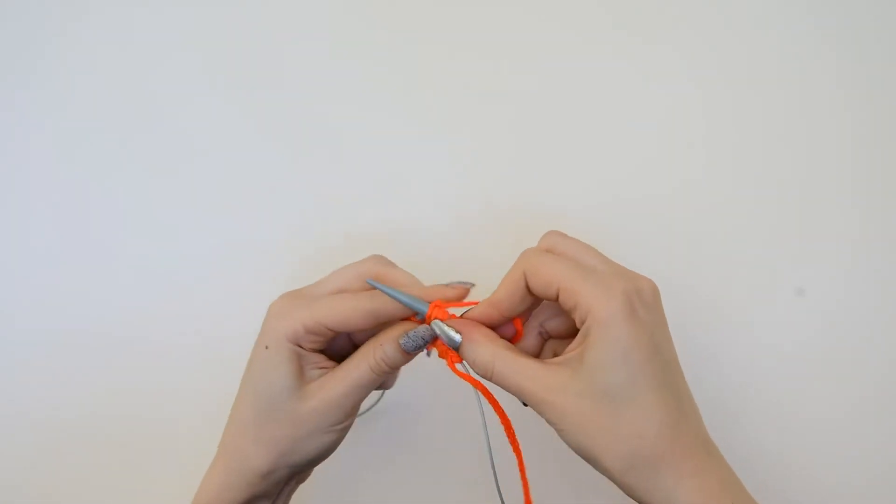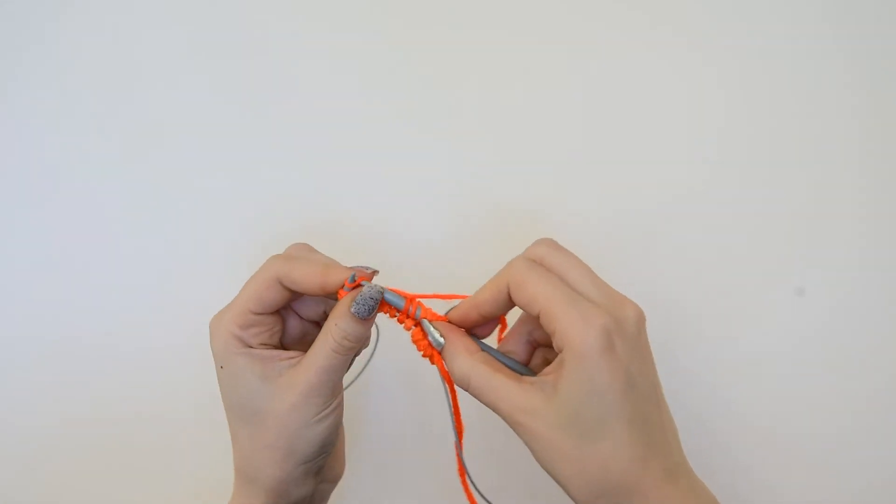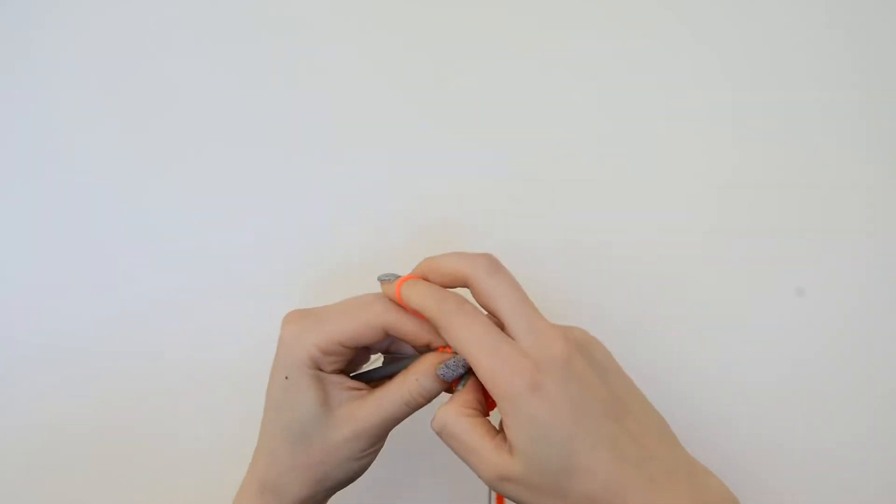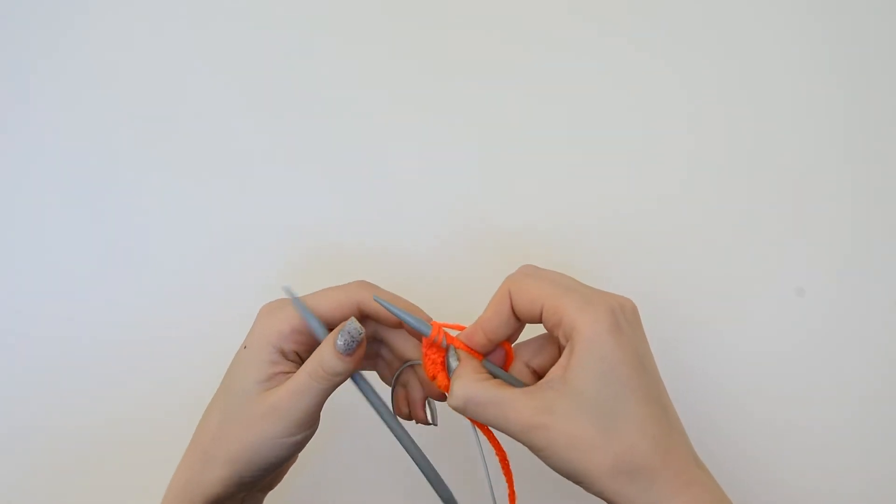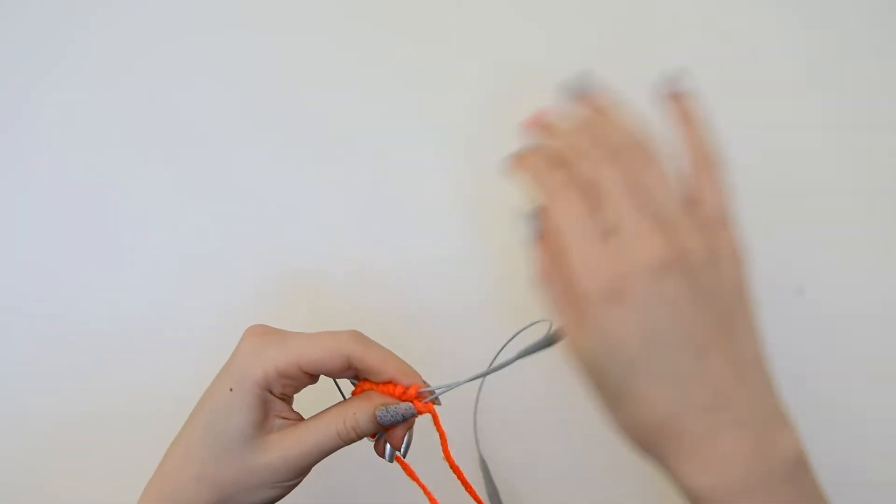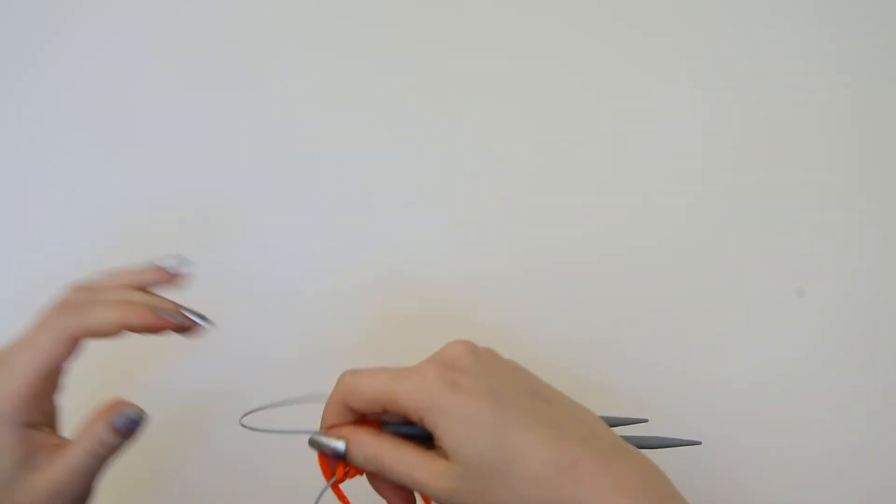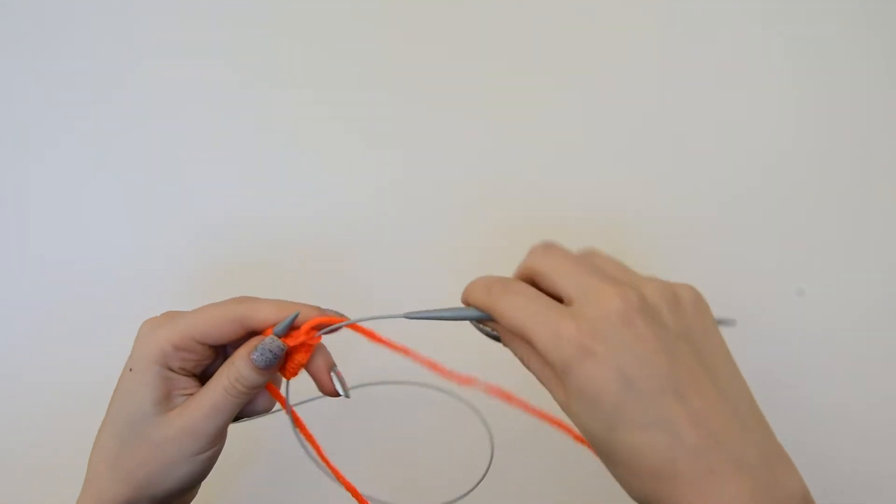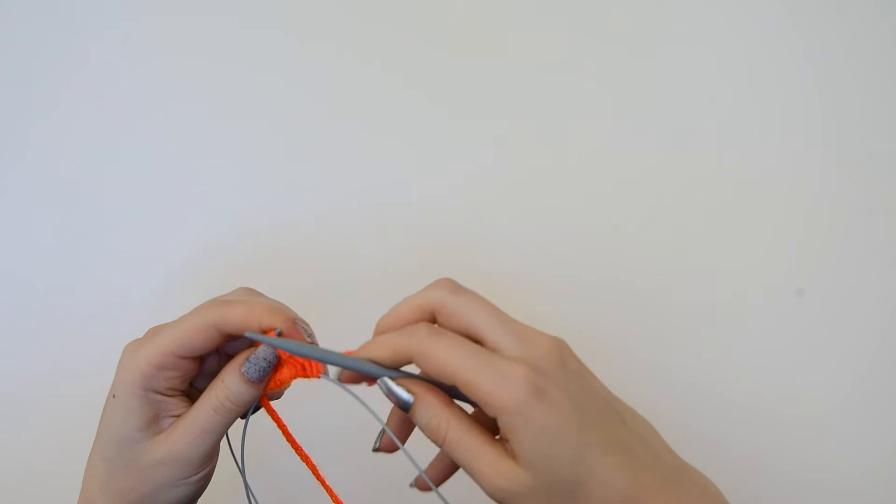If you are working on a stockinette stitch pattern, instead of casting on your first stitch on the upper needle, you'll cast on that first stitch on the lower needle. And you won't have to flip your cast-on upside down before you start, because you won't want that ridge showing in front.